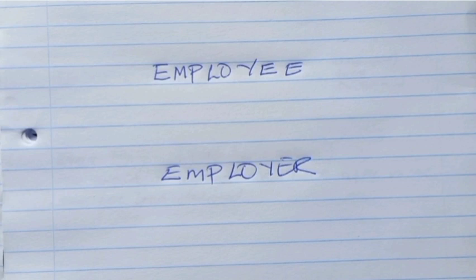The income tax we are talking about is for individuals, and therefore we need to know that there is an employee and an employer. This will also help us when we are talking about UIF, where one percent is paid by an employee and the other one percent is paid by an employer. That will be covered in the UIF topic. So what is an employee and what is an employer?